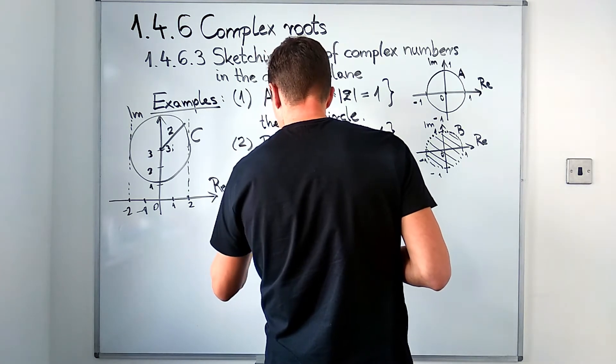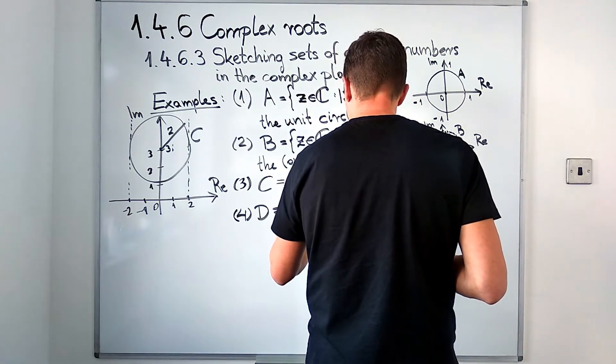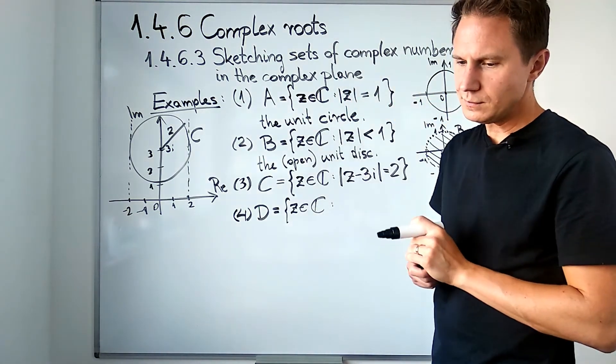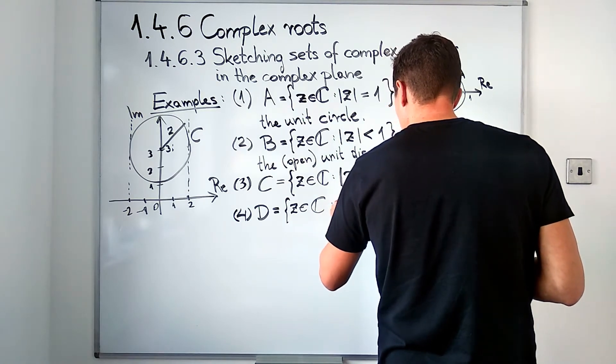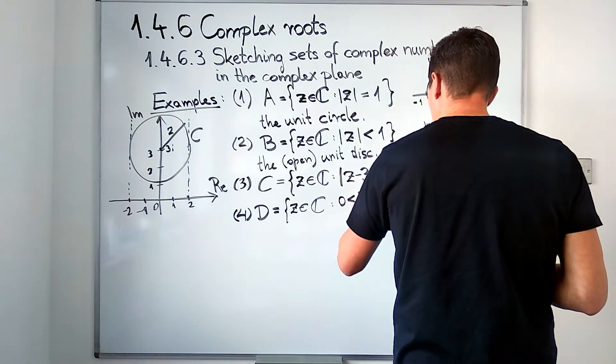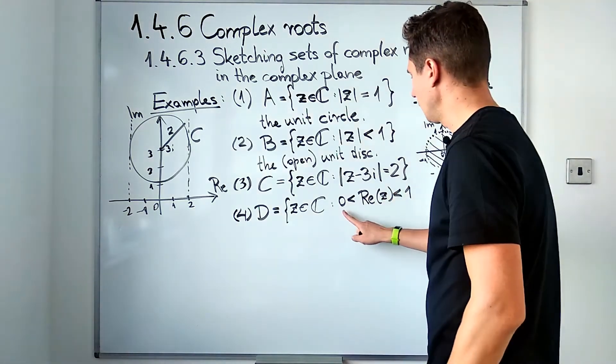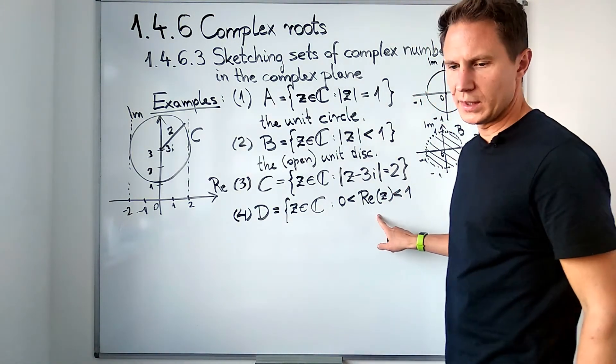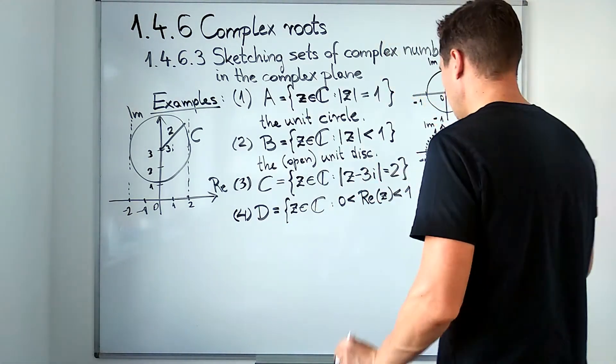Finally, for set D, we would like to look at the following set of numbers. Let's have complex numbers such that their real parts are greater than zero but less than one.